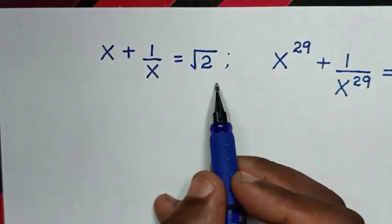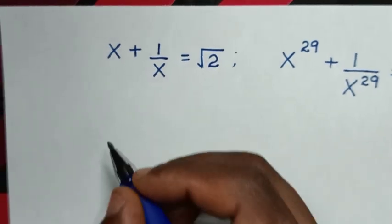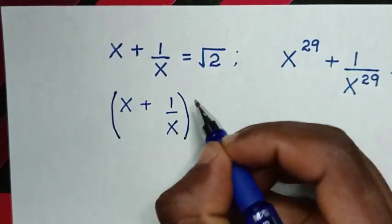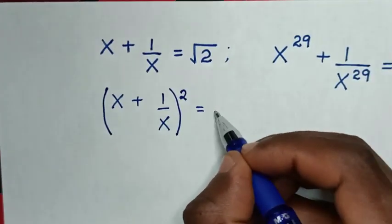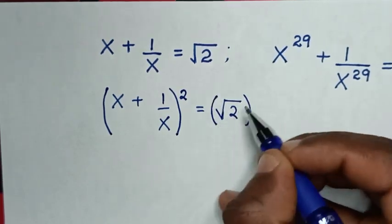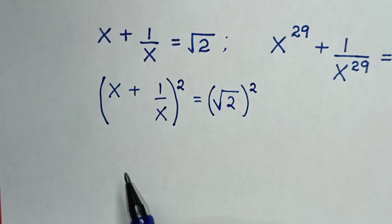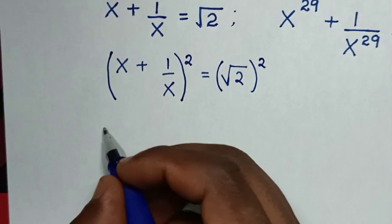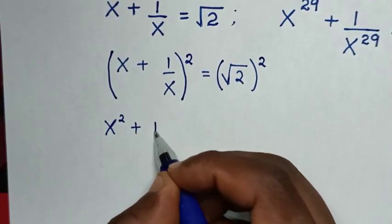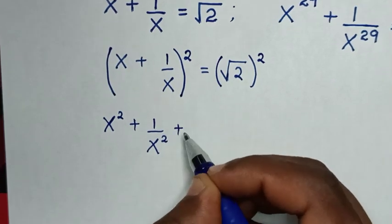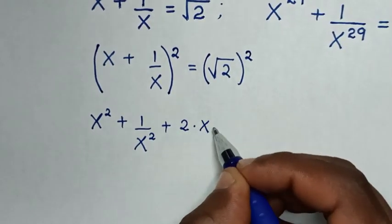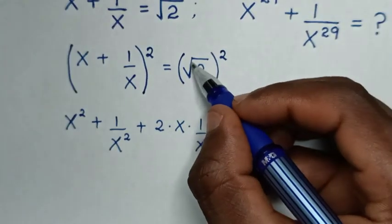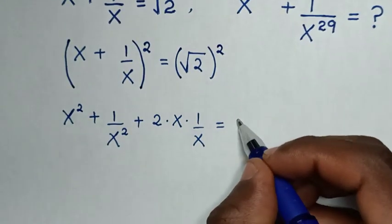From this, our original equation — we square both sides. Then it will be (x plus 1 over x) squared is equal to (square root of 2) squared. When we expand (x plus 1 over x) squared, it will be x squared plus 1 over x squared plus 2 times x times 1 over x, equal to 2, because the square root cancels the square.